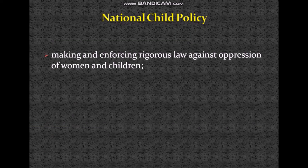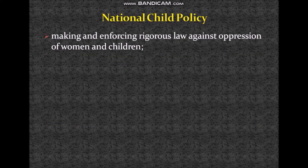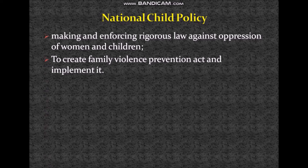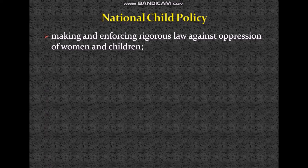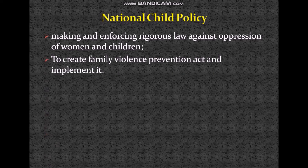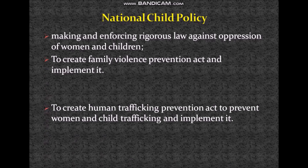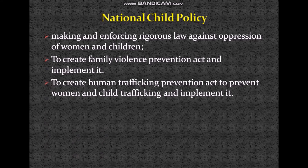The next one is making and enforcing rigorous law against oppression of women and children. Rigorous means strict. We are talking about strict law against oppression — oppression means torture or any kind of unjust behavior or unjust treatment on women and children. Then, to create a Family Violence Prevention Act and implement it. After that, to create a Human Trafficking Prevention Act to prevent women and child trafficking and implement it.